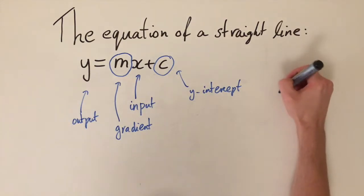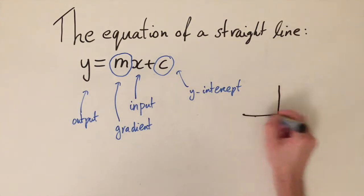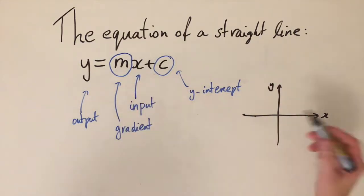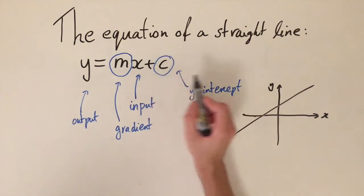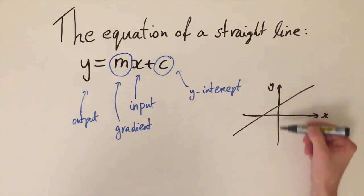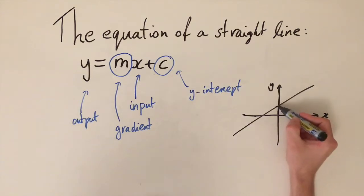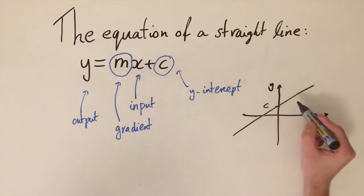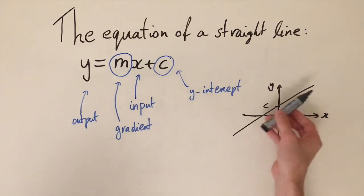So we can have a look at what this looks like on a set of axes. Let's draw the x-axis and the y-axis up here, and then for a general line let's just draw a line like here. So the plus c constant gives us how high up the y-axis this line crosses. It crosses the y-axis right here when x is equal to 0, and this is the plus c constant. And then m, the gradient, this tells us how steeply the line goes.